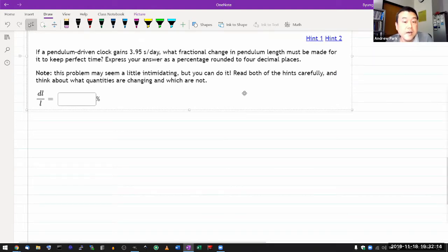Express your answer as a percentage rounded to four decimal places. I remember looking at this question and wanting to do it slightly differently from the hint. I don't know if that's necessarily quicker.